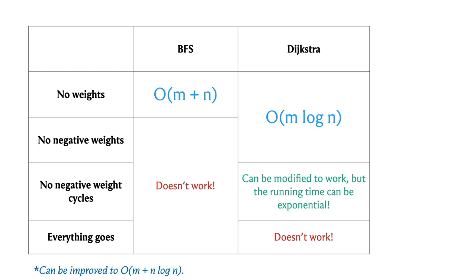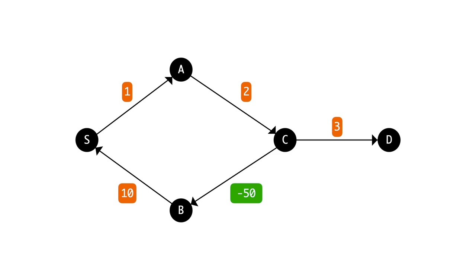Even the modified version of Dijkstra's algorithm can run into an infinite loop if there is a negative weight cycle in the input graph. The focus of this module is to address negative cycles. The fundamental issue is that the very notion of shortest paths becomes ill-defined when you have a negative cycle. Here is an example graph with a cycle on vertices S, A, C, B whose total weight is negative 37.